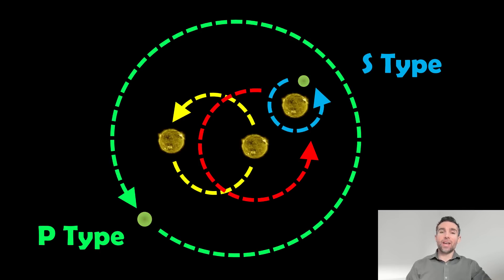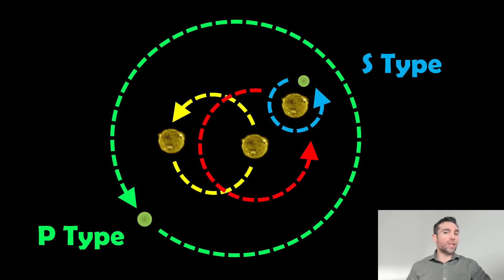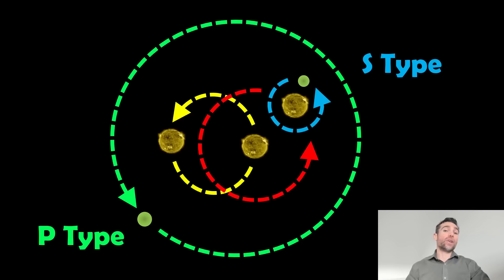I did a separate video that looked at the orbits of a planet going around two stars — a binary star — and it could be circumbinary, so going around the outside of both of them, or it could just be orbiting one of them. Now we know that there are planets orbiting more than two stars, so we need to look at the orbits of a planet around three stars or even more.